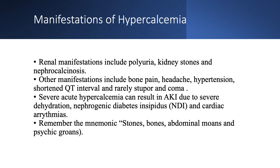Renal manifestations are important. You can get polyuria, kidney stones, and nephrocalcinosis. Obviously, you need chronic hypercalcemia to get kidney stones and nephrocalcinosis. Other manifestations include bone pain, headaches, hypertension, and shortened QT interval. Remember, in hypocalcemia we talked about a long QT interval. In extreme cases, you can get stupor and coma. In severe hypercalcemia, I often see altered mental status — metabolic encephalopathy.